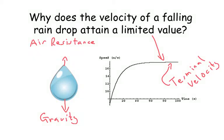Hi guys, today I got tweeted this question: why does the velocity of a falling raindrop attain a limited value? So basically, the raindrop gets faster and faster and faster, but at a lower and lower rate, and eventually comes to a steady value.